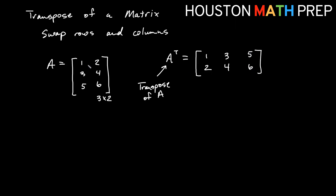Whether you go down the rows and say 1, 2 becomes a column; 3, 4 becomes a column; 5, 6 becomes a column — or you think of it as 1, 3, 5 is a column here so 1, 3, 5 becomes a row — you can do it either way. That's probably not too difficult.